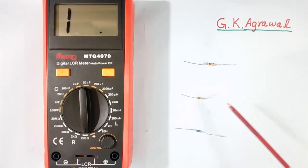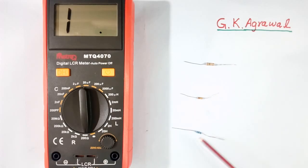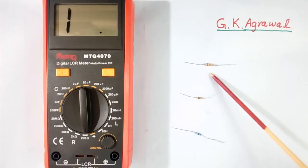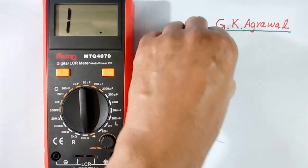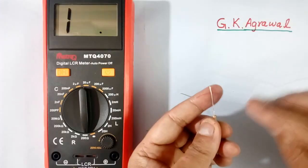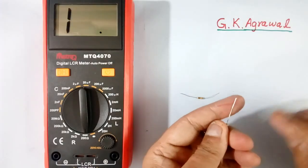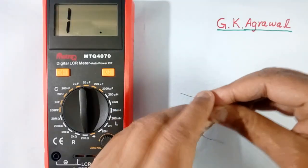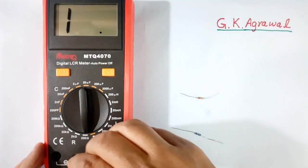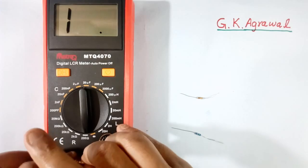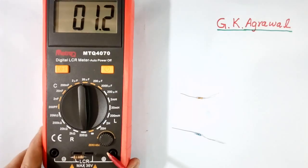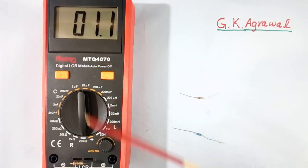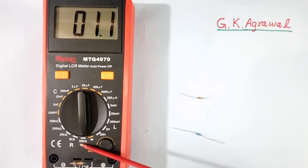Now we will measure the value of these 3 resistors. This is the lowest value resistor and this has a very high value. When the resistance value is very low — about 1 ohm — what we do is we clean the leads first using a blade. Then only we connect, otherwise it will give an error. It is showing 1.1 ohm. The scale I have kept at minimum 200 ohm.